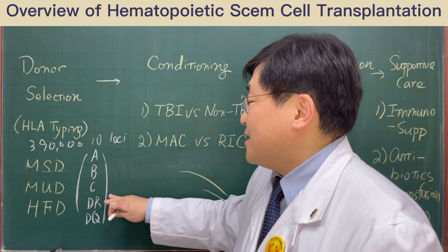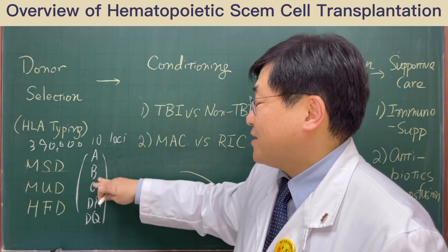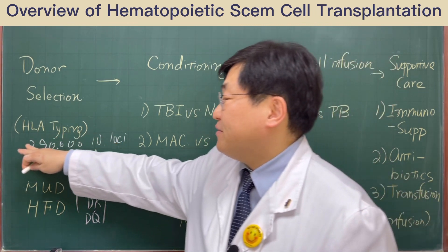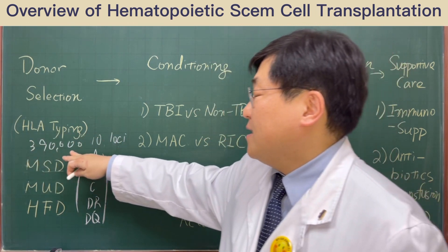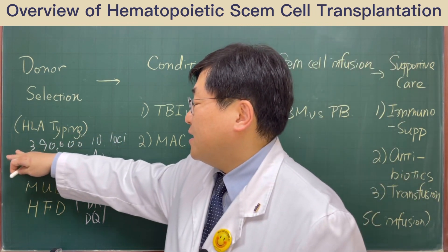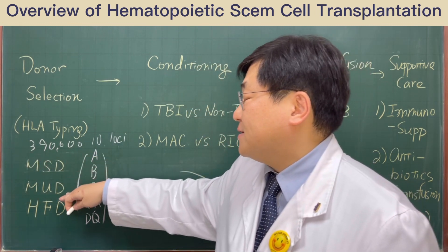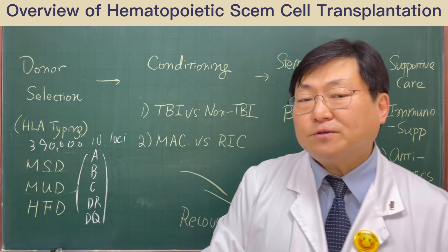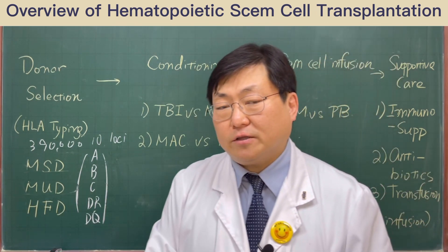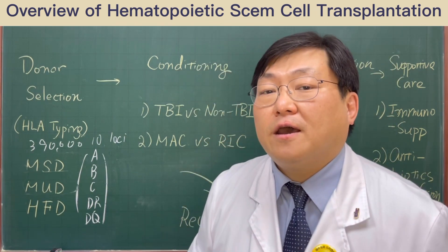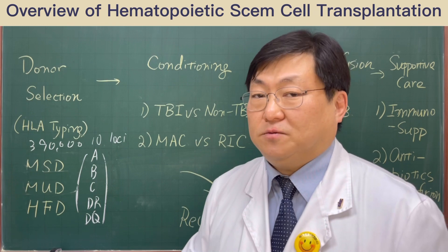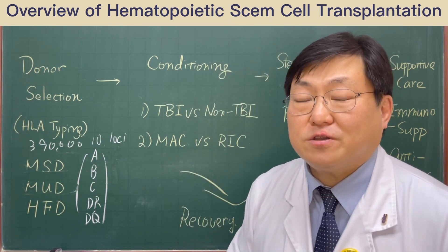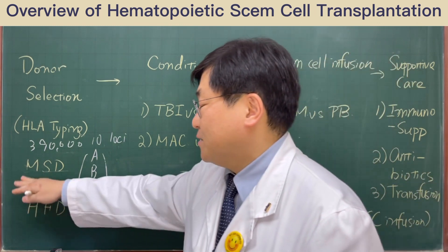If there is no matched sibling donor, we need to evaluate the unrelated donor. In Korea, we have about 390,000 volunteers who are waiting for blood stem cell donation. After checking the patient's HLA typing, we can search the HLA donor banking database and find some appropriate matched unrelated donors. Sometimes we can find only 5 matched unrelated donors, but in very specific cases, we can find more than 100 volunteers.